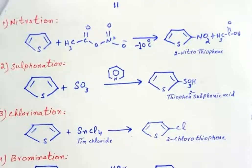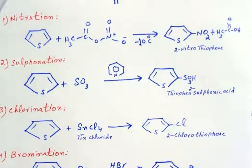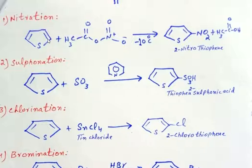Now we will discuss the chemical reactions of thiophene. As discussed earlier, thiophene is aromatic in nature and its ring is electron-rich; negative charge is delocalized over the whole pi system. Therefore, only electrophilic substitution reactions are possible. Since the electrophile is positively charged, it is substituted onto the thiophene ring, and the preferred position for substitution is position 2.